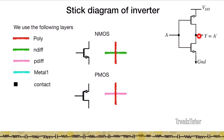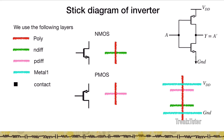An inverter consists of a PMOS and an NMOS with their drains shorted. The source of the PMOS is connected to VDD, the drain to the output, and the source of the NMOS is connected to ground. The gates are shorted to create the input. The stick diagram starts by drawing the p-diff forming the PMOS and the n-diff forming the NMOS, with a shared poly indicating the gate connection.